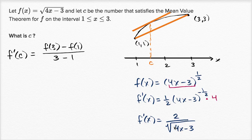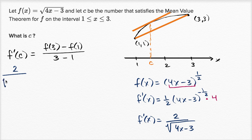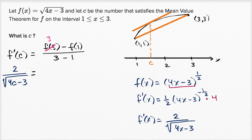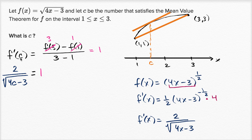Since 4x minus 3 to the negative one half goes in the denominator, f prime of c equals 2 over the square root of 4c minus 3. And what is that going to be equal to? f of 3 we already figured out is 3, f of 1 we already figured out is 1. So we get 3 minus 1 over 3 minus 1, which is 2 over 2, equal to 1. So there's some point between 1 and 3 where the slope of the tangent line is equal to 1.